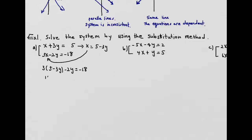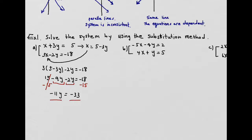Open the parentheses and combine like terms. You need to subtract 15, then combine like terms again to get negative 11y equals negative 33. Dividing both sides by negative 11, you get y = 3.